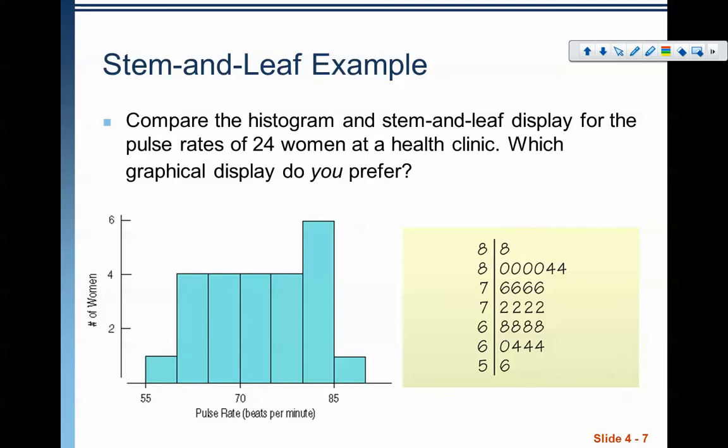Stem and leaf displays do that. So over here, we have a stem and leaf display. This is some data for 24 women at a health clinic about pulse rates. Here, this is what the histogram would look like. Notice that if you kind of turn your head, if you rotate your head a little bit and flip it, the shape is about the same. I hope everybody's turning their heads right now. So stretch your neck out real good.